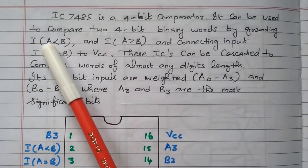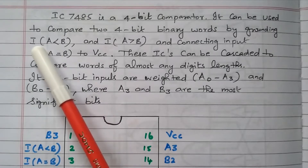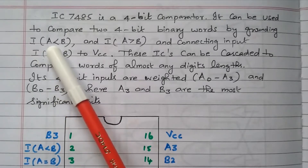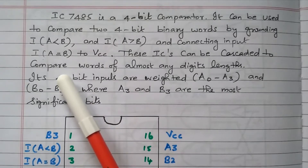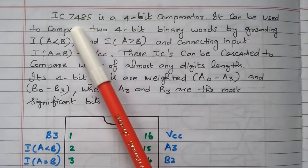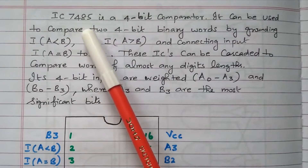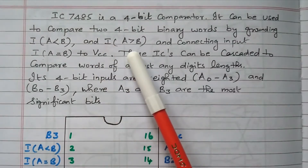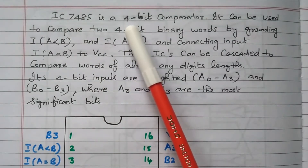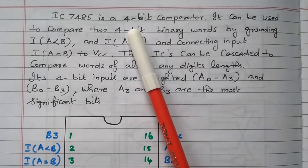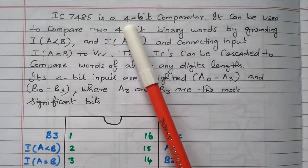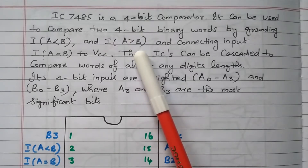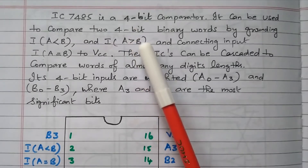For that, three cascade inputs are available: input of A-less-than-B, input of A-greater-than-B, and input of A-equal-to-B. This IC 7485 can be cascaded — we can add one more IC in order to check an 8-bit number. So this IC is used to check 4 bits, and by adding one more IC we can check an 8-bit number.